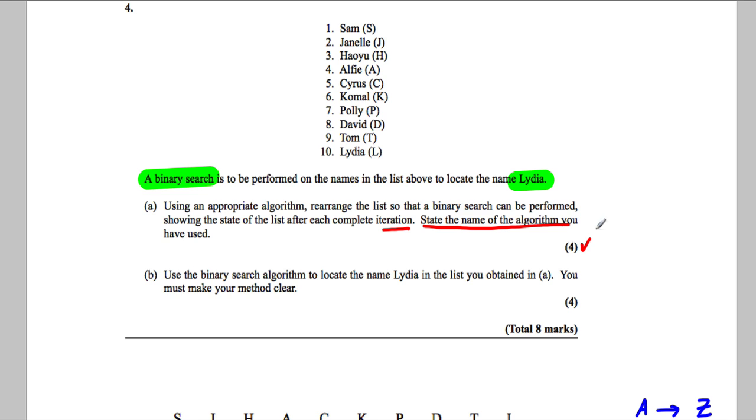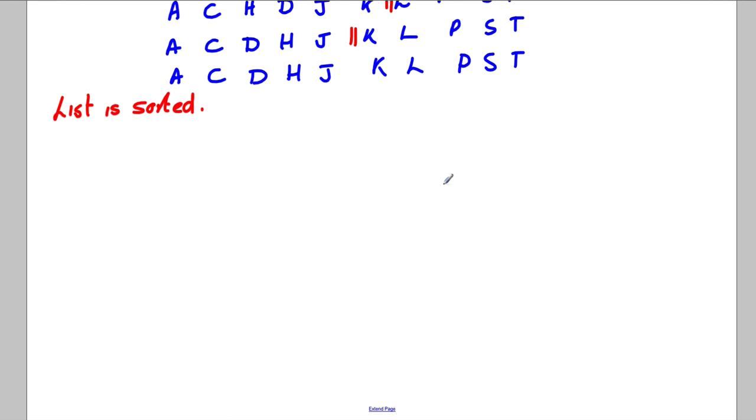We've stated our algorithm for part A. Now we're asked to use the binary search algorithm to locate Lydia from the list you obtained in A. You must make your method clear, so we're going to use the ordered list now.